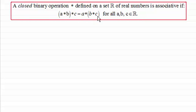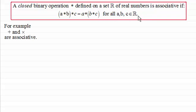I'll explain this in a moment through a few examples. This is true for all elements a, b and c of the set of real numbers. Now we should already be familiar with this when it comes to addition and multiplication — these are associative operations, as I'll demonstrate.